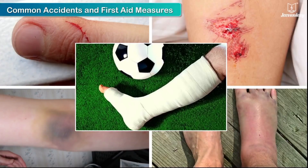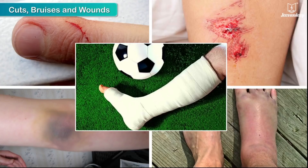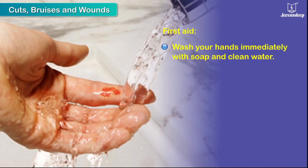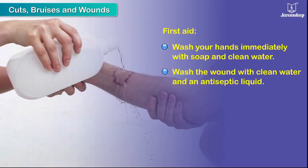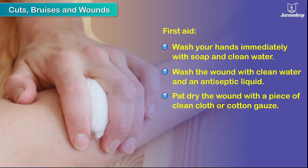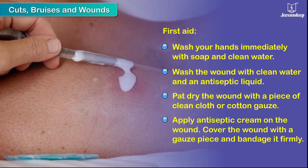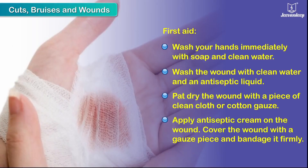Common accidents and first aid measures: Cuts, bruises, and wounds. First aid — wash your hands immediately with soap and clean water. Wash the wound with clean water and an antiseptic liquid. Pat dry the wound with a piece of clean cloth or cotton gauze. Apply antiseptic cream on the wound. Cover the wound with a gauze piece and bandage it firmly.